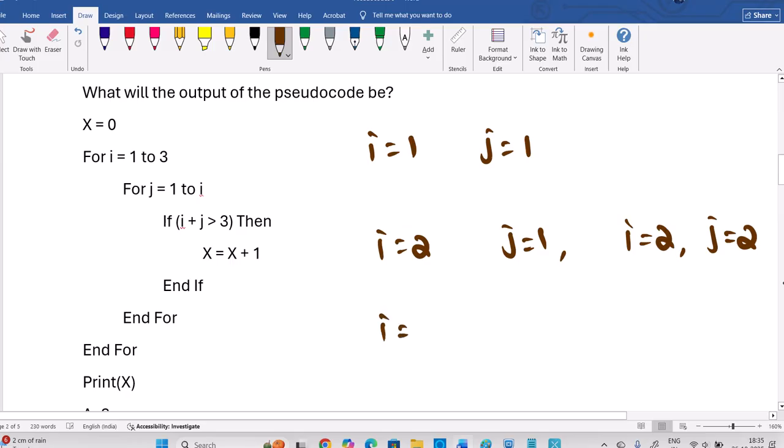Then next, when I equal to 3, J can be 1, J can be 2, J can be 3. Because I equal to, J equal to 1 to 3 is available. So, fine. Now, what is the condition inside this here? Look, X should be increased by 1 when I plus J is greater than 3.